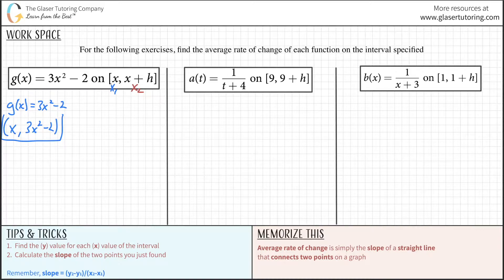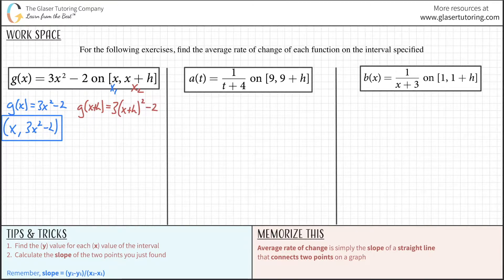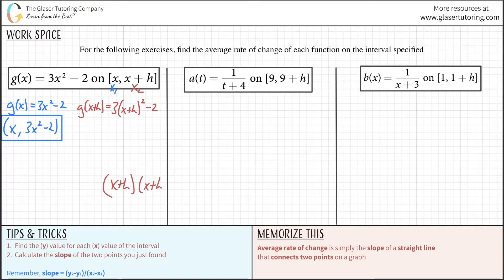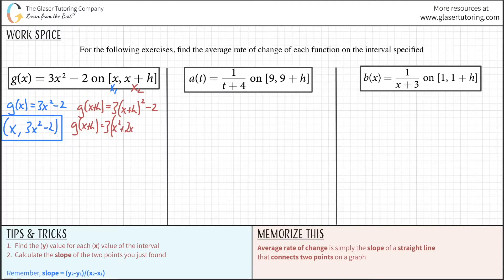The coordinates here would be (x, 3x² - 2) — those are the coordinates of this first point. Now let's do it for x2. We have g(x+h), and that's going to equal 3 times (x+h) squared minus 2. We're going to FOIL this, meaning x+h times x+h: x times x, x times h, h times x, and h times h. So the value we get is 3 times (x² + 2xh + h²) minus 2.